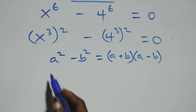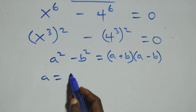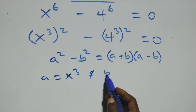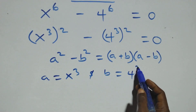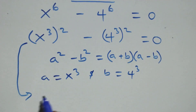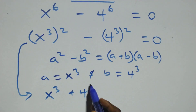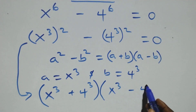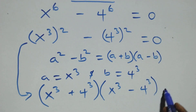Here a stands as x raised to power 3 and b stands as 4 raised to power 3. Then what we have becomes x raised to power 3 plus 4 raised to power 3, into bracket, then open bracket x raised to power 3 minus 4 raised to power 3, close bracket, equals to 0.